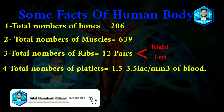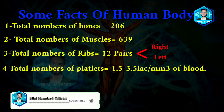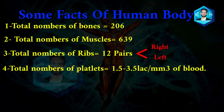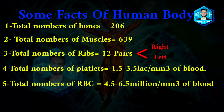Number four: total number of platelets is 1.5 to 3.5 lakh per millimetre cube of blood. In the human body, platelets — in one milliliter cubic of blood there are 1.5 lakh to 3.5 lakh platelets.